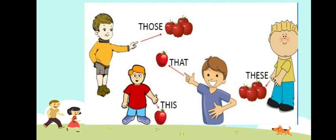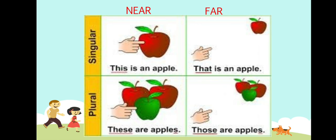Let's check out the same concept in sentences. In singular form we use 'this' and 'that', and in plural form we use 'these' and 'those'. For near things: 'This is an apple', and the plural form is 'These are apples'. For far things: 'That is an apple', and the plural form is 'Those are apples'.